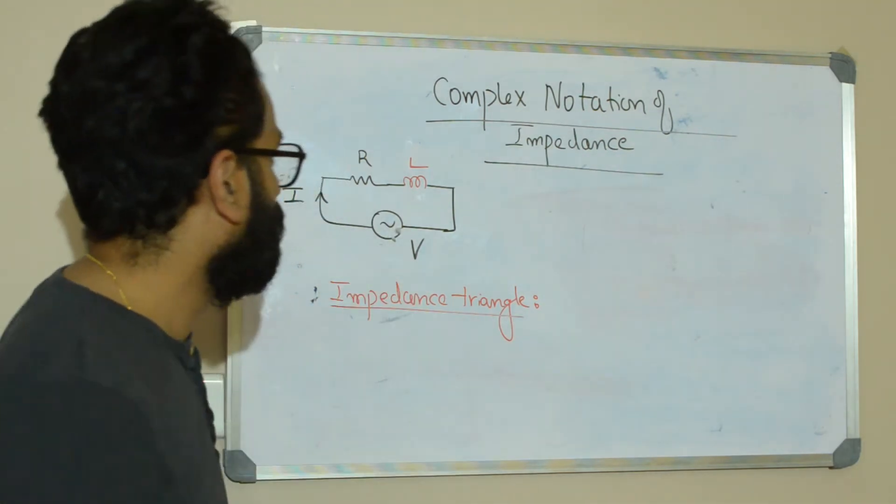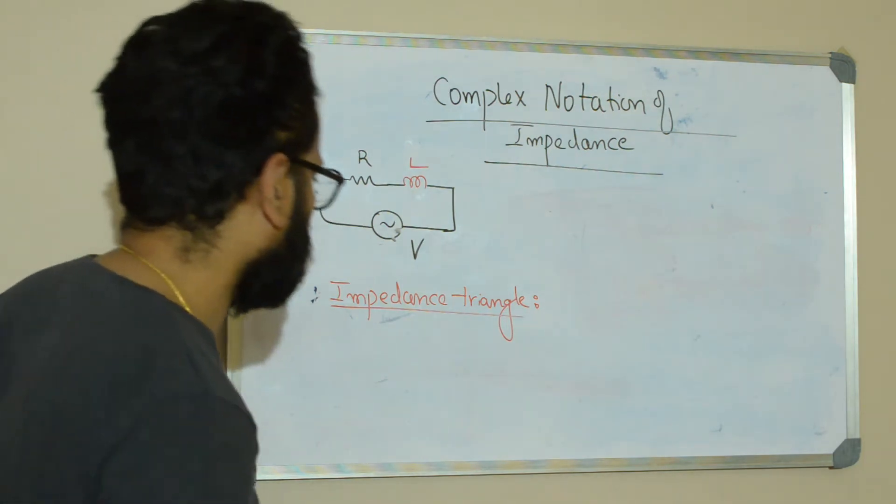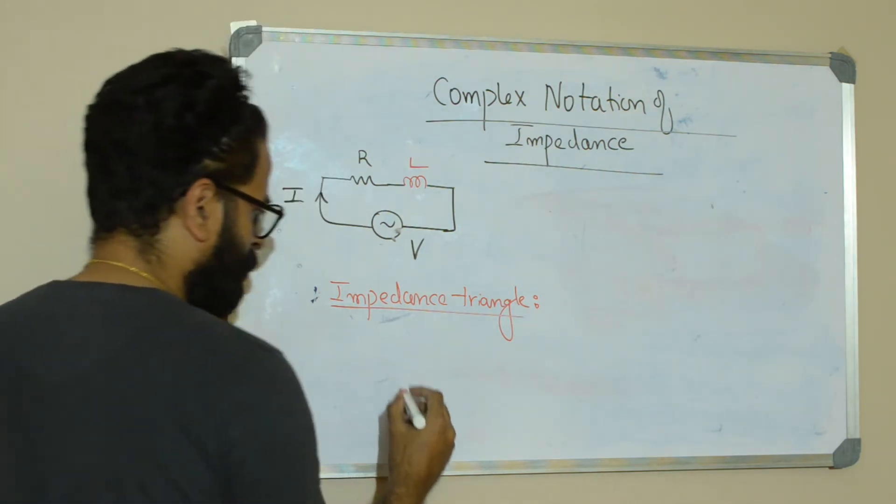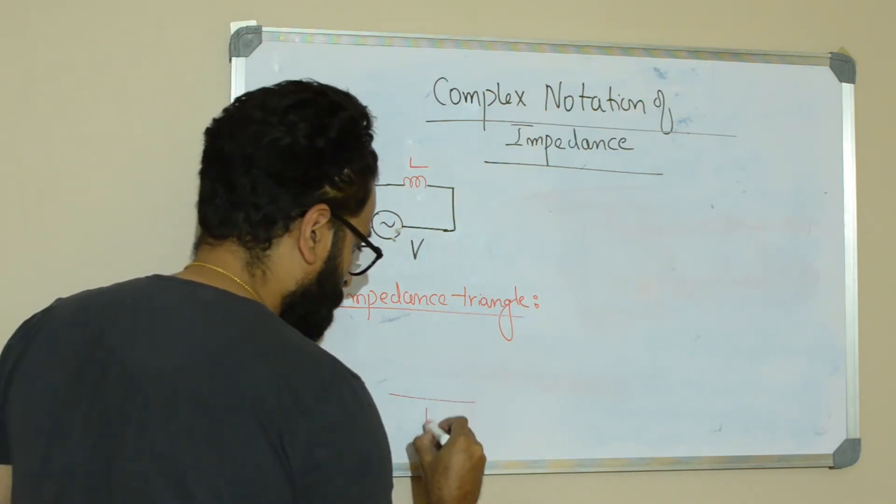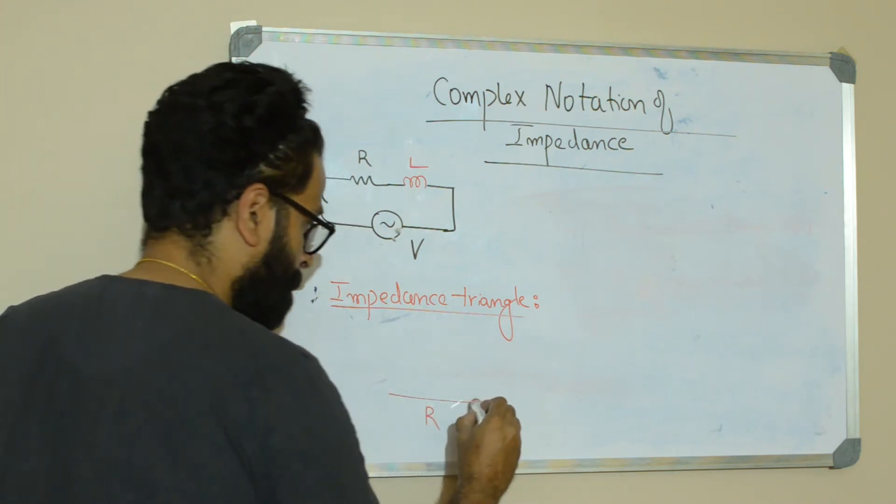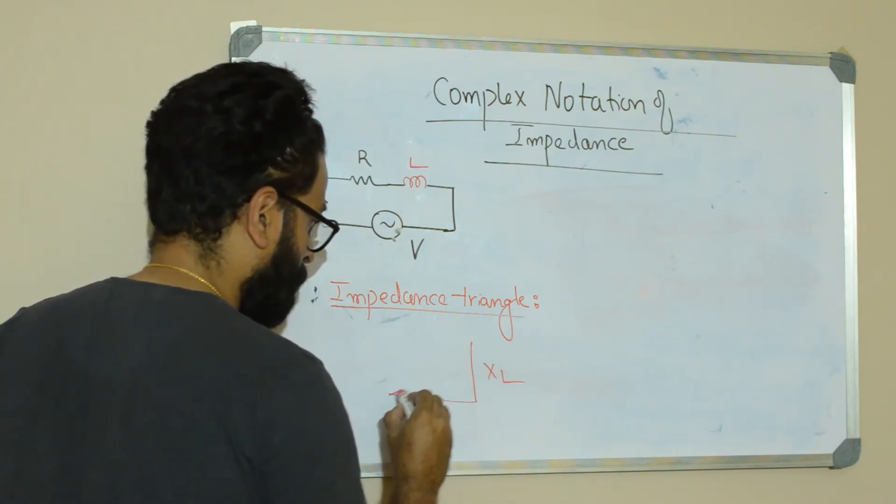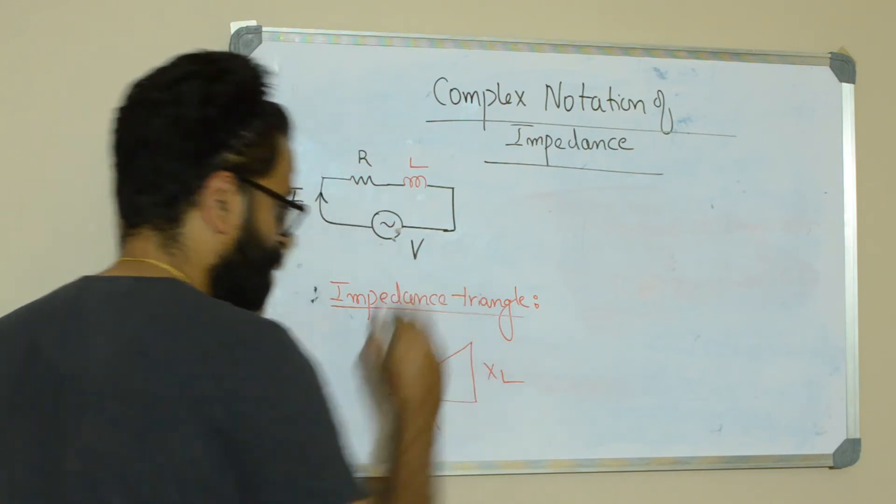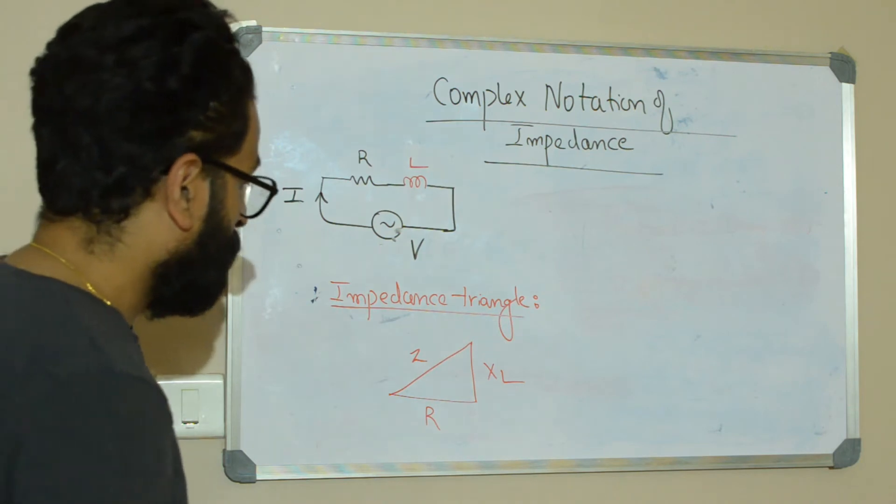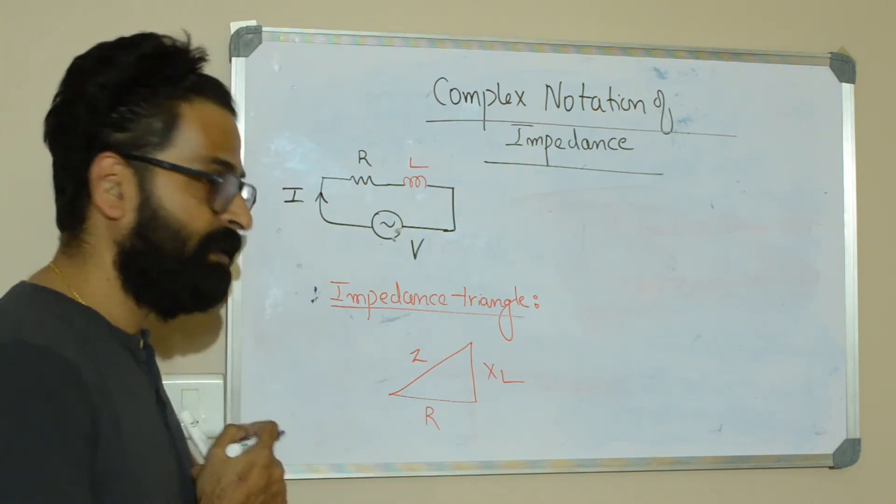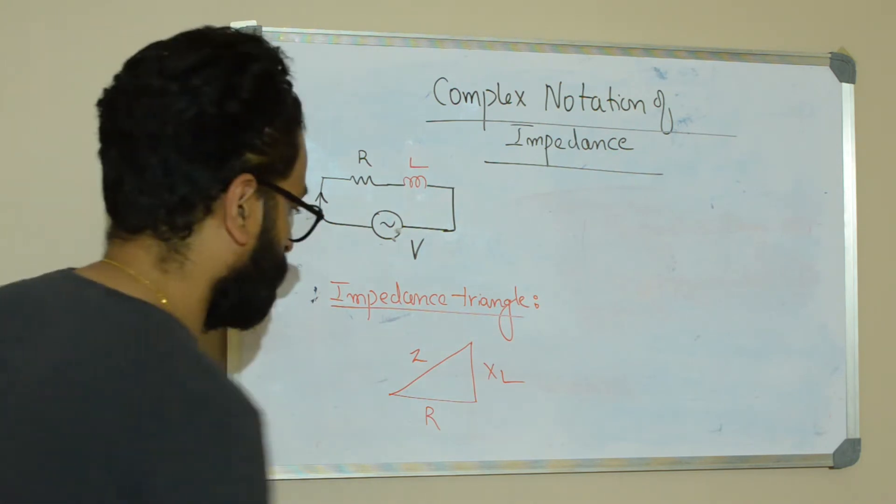Now let us consider RL circuit. In case of RL circuit, the impedance triangle was something like this: R, XL, resultant Z. So let's apply the similar technique which we had applied by handling RL circuit.